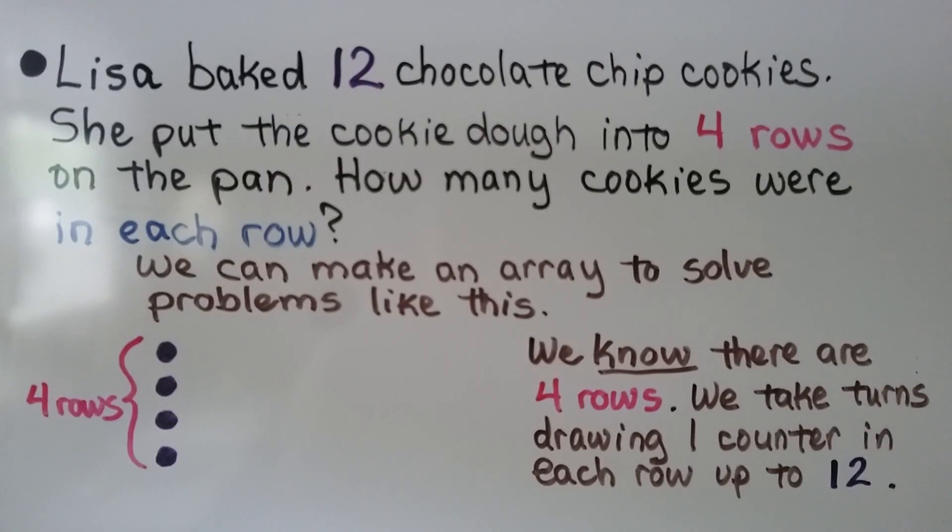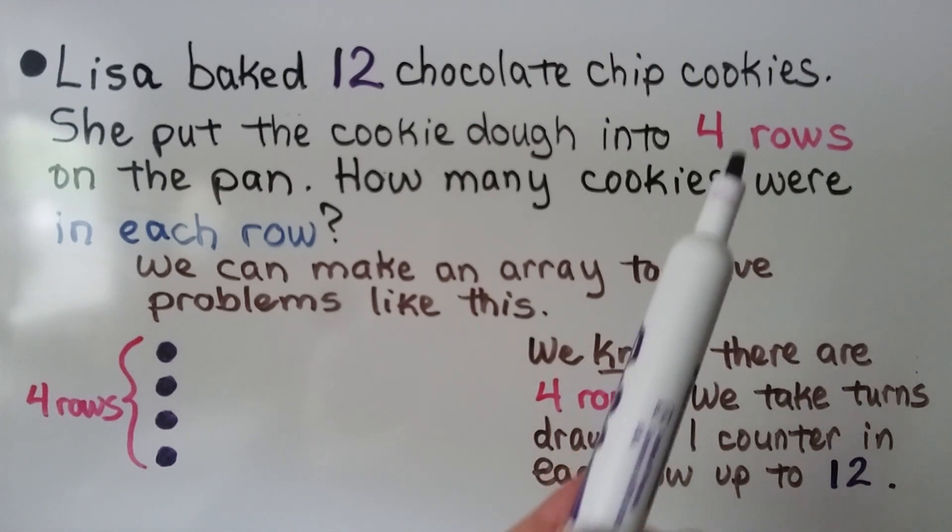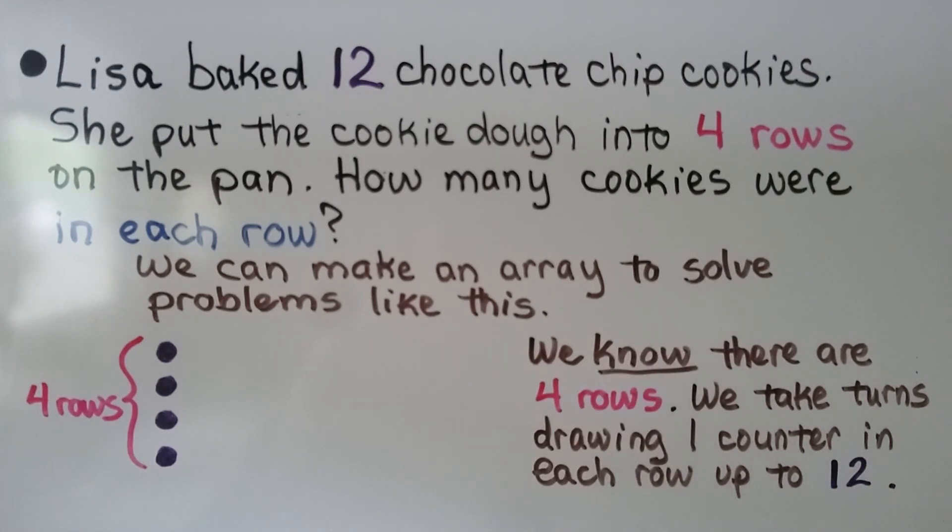Lisa baked 12 chocolate chip cookies. She put the cookie dough into 4 rows on the pan. How many cookies were in each row? We can make an array to solve problems like this. We know there are 4 rows.